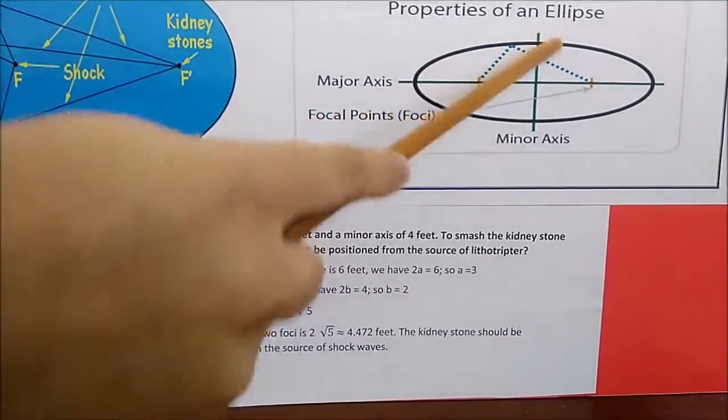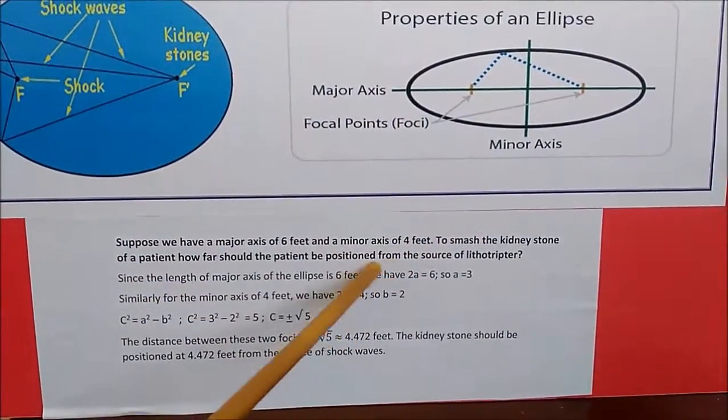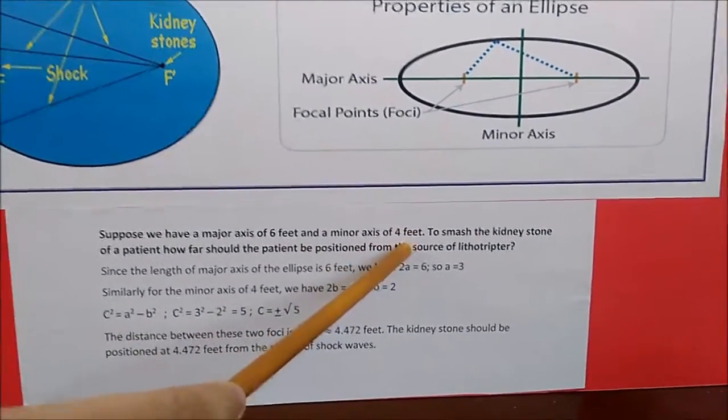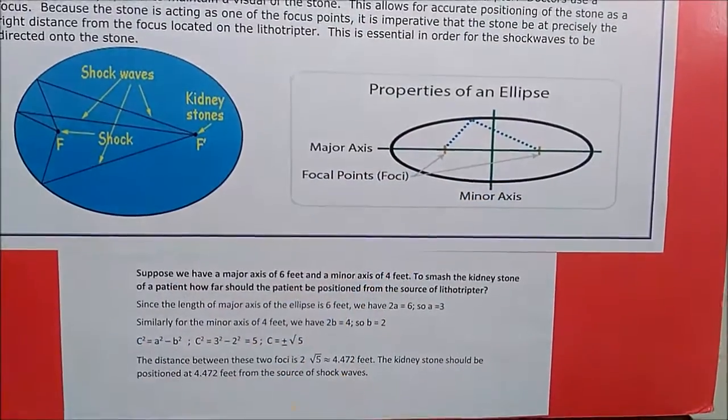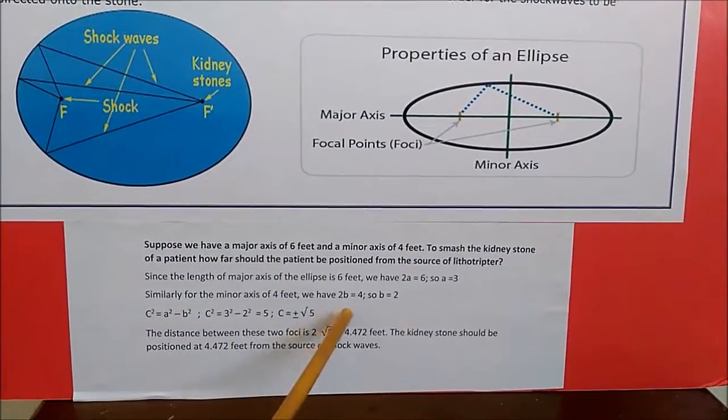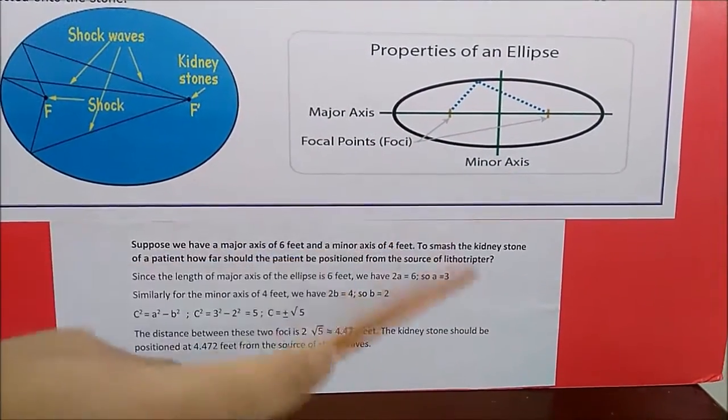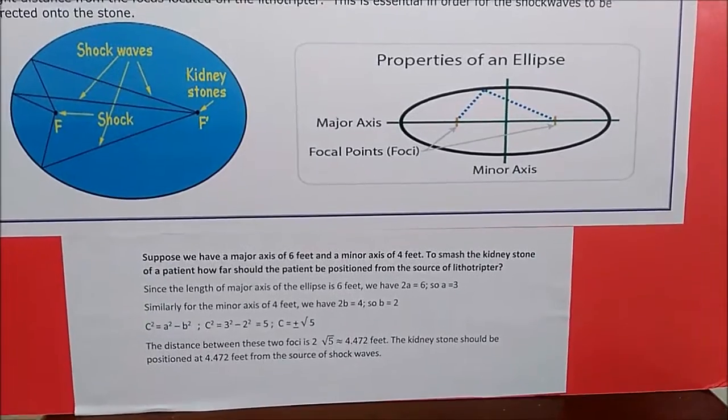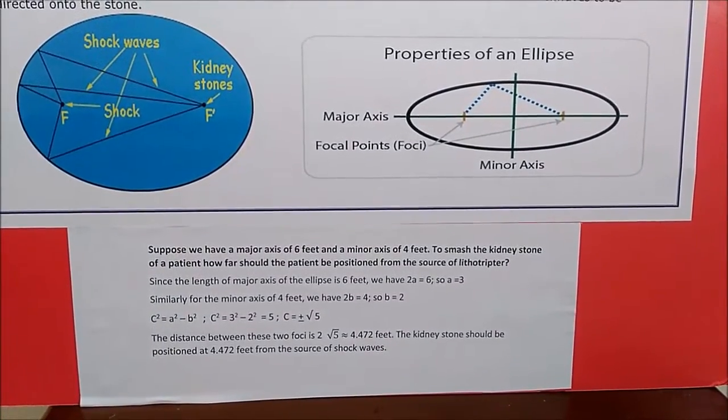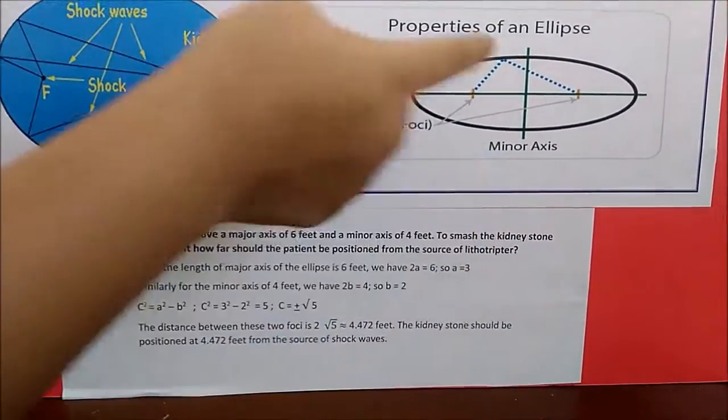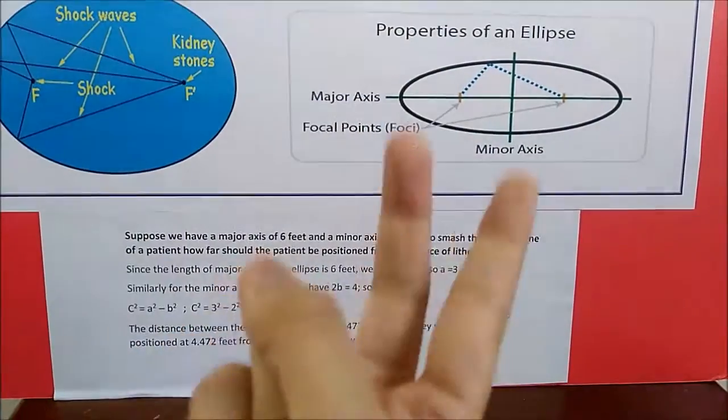Now let us see the minor axis. The distance from here to here is 4 feet. So 2b is equal to 4, so b is equal to 2. Because 4 divided by 2 is equal to 2. So we can understand that the distance from here to here is 2.